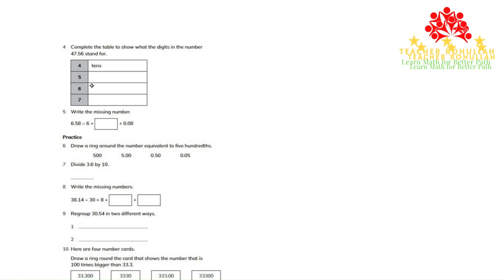So what does 5 stand for? 5 stands for tens. And 6 stands for hundreds because it is in the decimal place, so it is hundreds. 7 stands for ones. That's it.